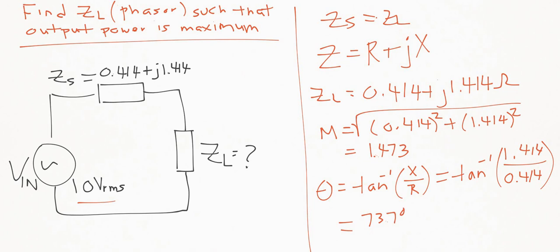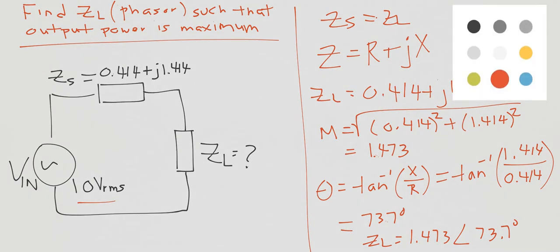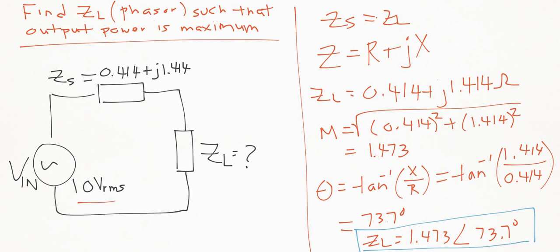And so, ZL ends up being 1.473 ohms at an angle of 73.7 degrees. And that is our answer. Right there.